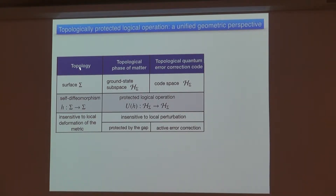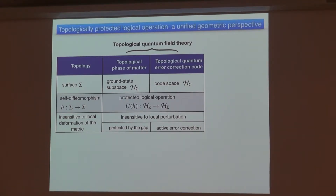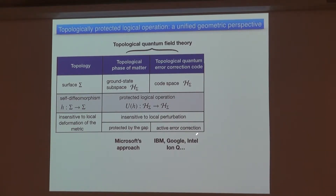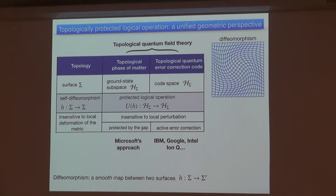I have a table with three kinds of entries. One is topology, which associates to a surface or manifold sigma. There is a topological phase or topological error correction code, most defined by a topological quantum field theory. In the quantum field theory perspective, it associates the surface of this manifold to a Hilbert space which stores your quantum information—in one case it's the ground state subspace, in the other case it's the code space. These two cases are pursued by different companies: Microsoft with passive topological quantum computation, and others pursuing active error correction.